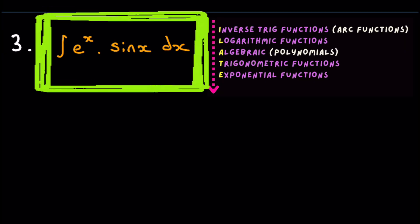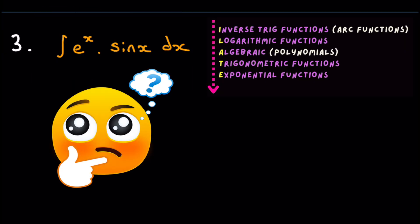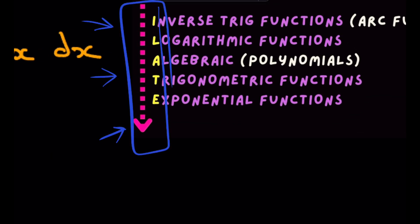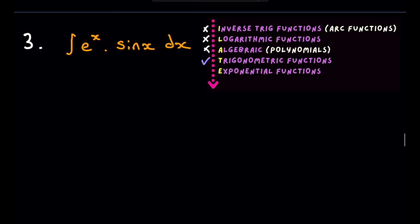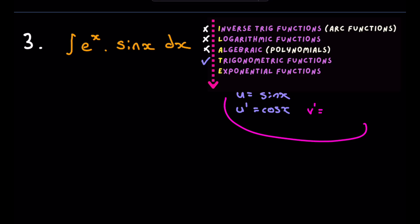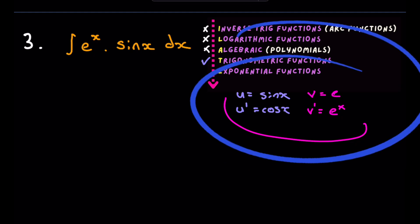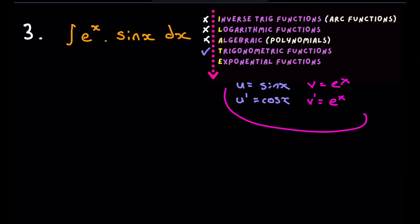Question three — watch this one carefully because there's a little trick you need to be aware of. Going through the acronym: no inverse trig functions, no log functions, no algebraic expressions like x or x squared. There are trig functions, so that will be our u. So u is equal to sine x, and the derivative of sine will become cosine. Then v prime is e to the x, and when we integrate e to the x we just get e to the x.